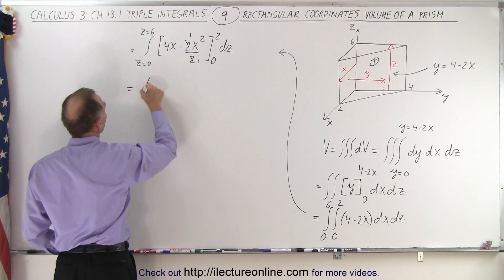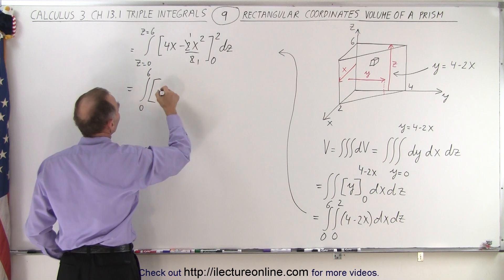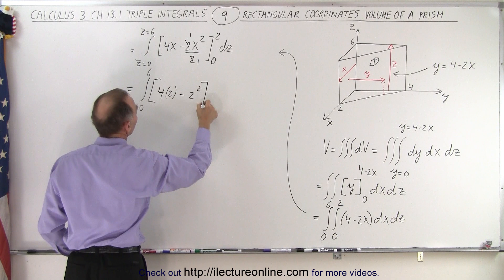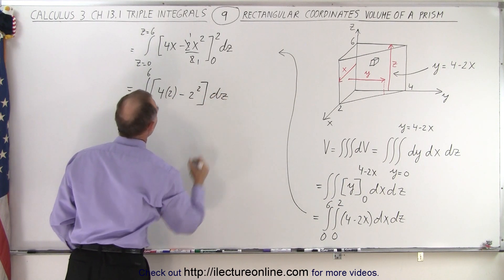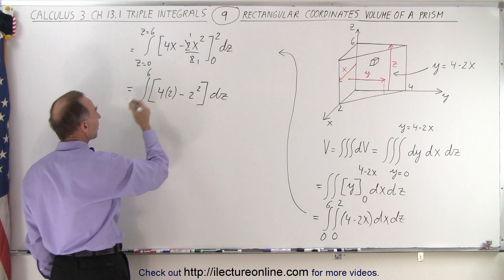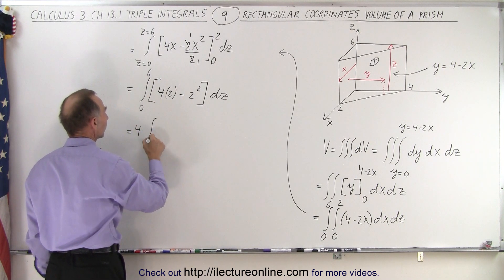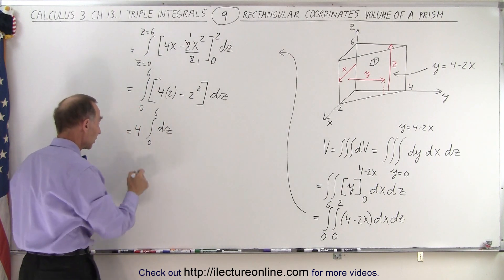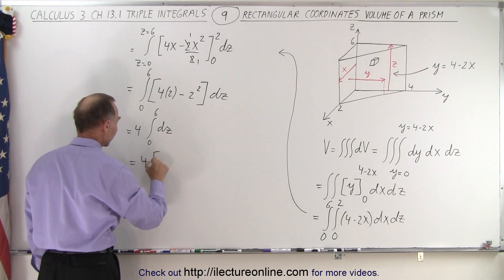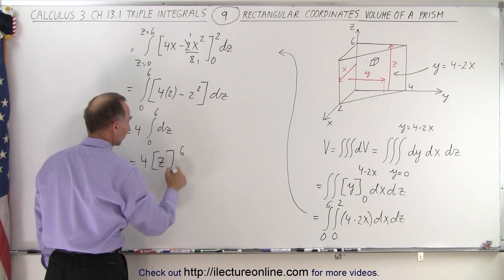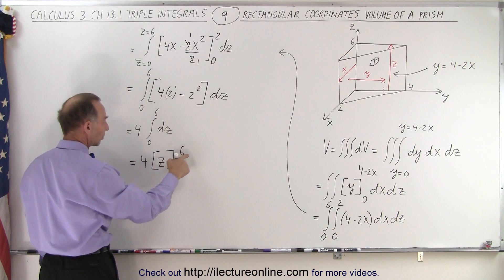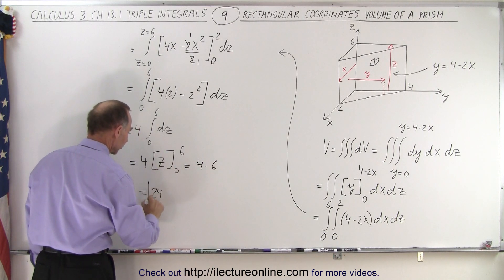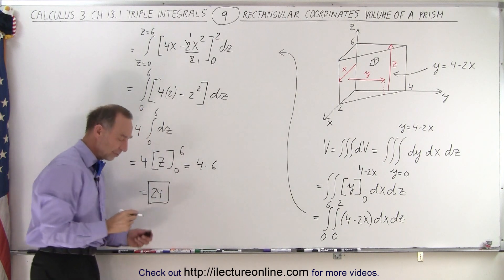So this is equal to the integral from 0 to 6 of 4 times 2 minus 2 squared dz. And so that would be 8 minus 4, which is 4, which can come out of integral signs. So this becomes 4 times the integral from 0 to 6 of dz. Now that's easy to integrate. That simply becomes 4 times z. The limits of integration are from 0 to 6. When I plug in the lower limit I get nothing. Plug in the upper limit I get 6. So this is equal to 4 times 6, or 24 for the total volume of that prism.